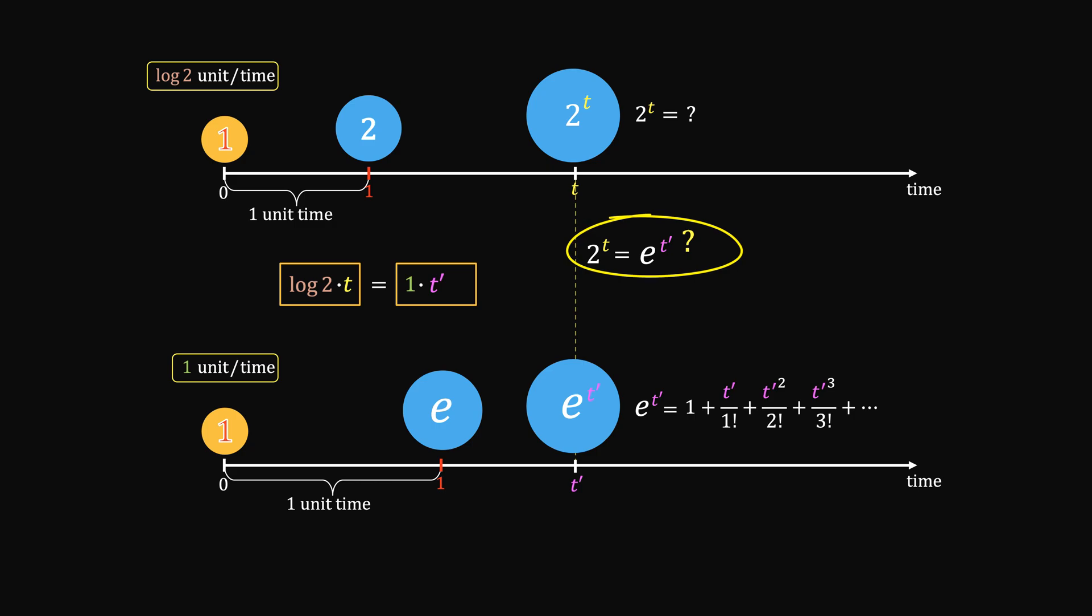Therefore, 2 to the power of t equals to e to the power of log 2t. But remember, this is operational.